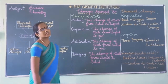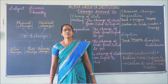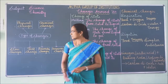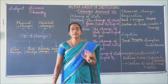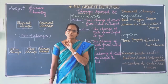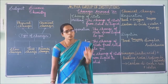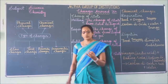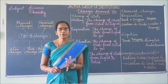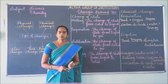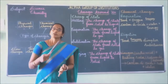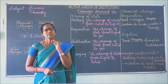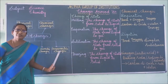Next is irreversible change. Irreversible change means the change which cannot be reversed. The substance will not come back to its original position. Examples include: growth of a child, germination of a seed, cooking, rusting of iron, and formation of curd from milk. These are some examples of irreversible change.